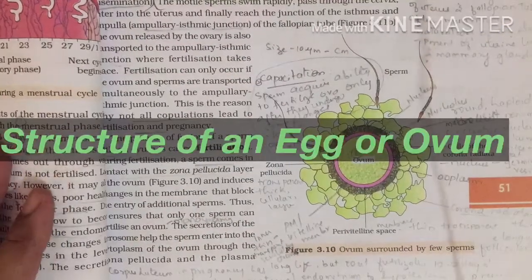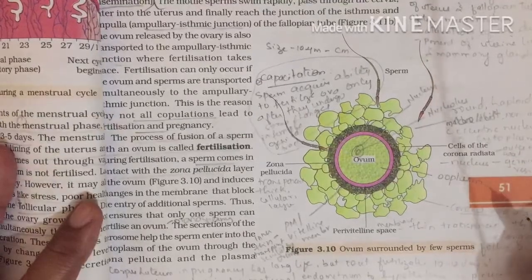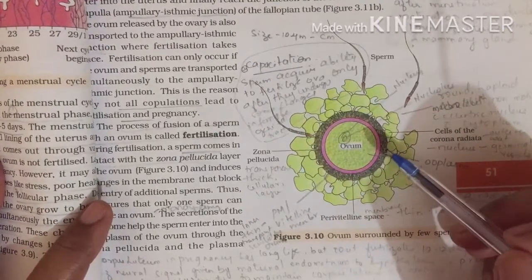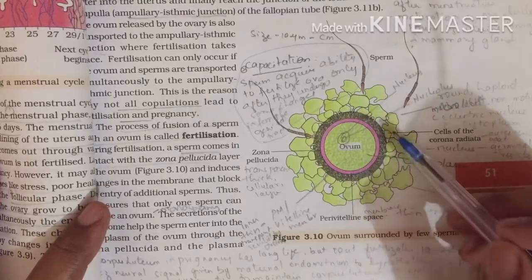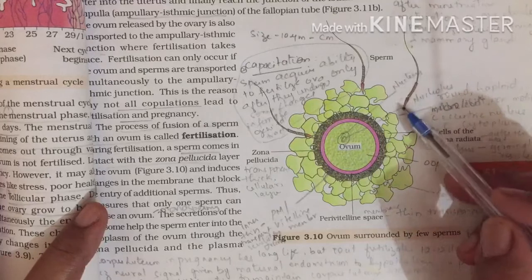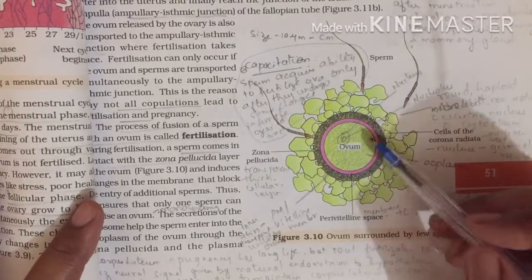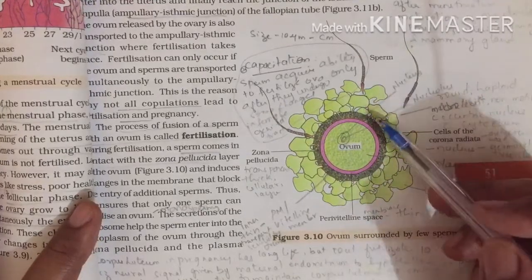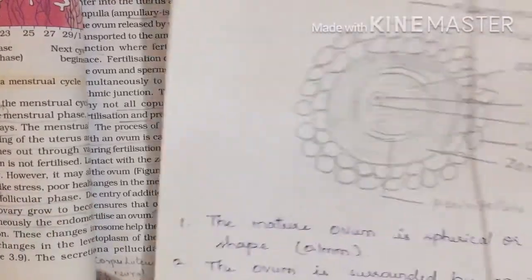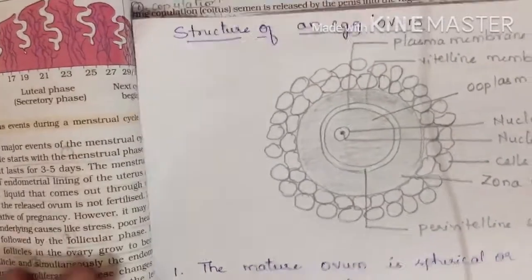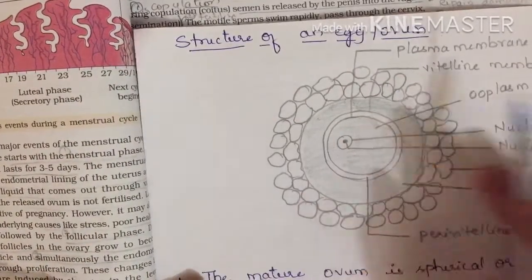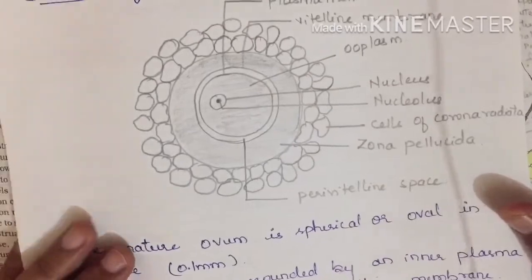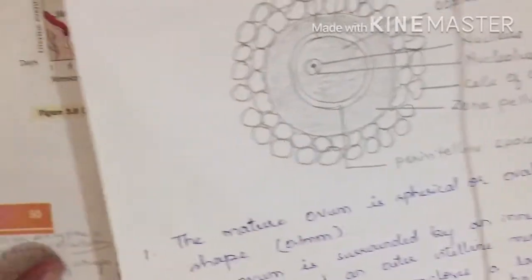The structure of an egg or ovum you will find in your textbook on page number 51. This structure of an ovum has been shown with fertilization — how sperms are reaching and getting fertilized with the ovum. But first we shall know what this structure consists of; later we shall discuss fertilization and implantation. I have drawn the structure of the ovum here, a very easy structure so it might be helpful for you all to draw and understand it.